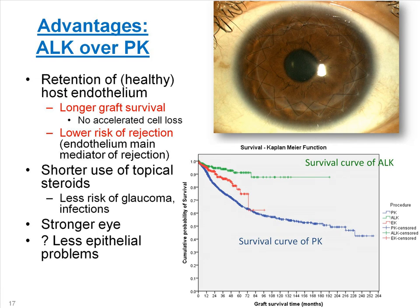The advantages of ALK over PK include, first, longer graft survival. As you can see in these survival curves, the green line denoting ALK has better survival in the short and long term compared to PK, denoted by the blue line. Additionally, because of retention of the healthy host endothelium, there is also a lower risk of rejection. Other advantages include shorter use of topical steroids — typically six months in ALKs — resulting in reduced risk of complications such as glaucoma or infections.